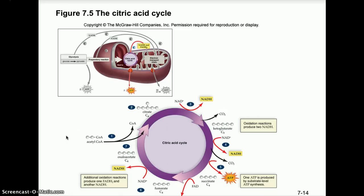Welcome to advanced biology lecture two for cell respiration. In our last lecture we went over glycolysis and the citric acid cycle. We looked at glucose coming into the cell, where glucose was initially broken down into pyruvic acid. Out of there you got four ATP molecules, but because in the first step of glycolysis you have an energy investment step you had to input two ATP molecules, so our net yield of ATP was only two. At the end we did get NADH, two ATP, and two molecules of pyruvate.